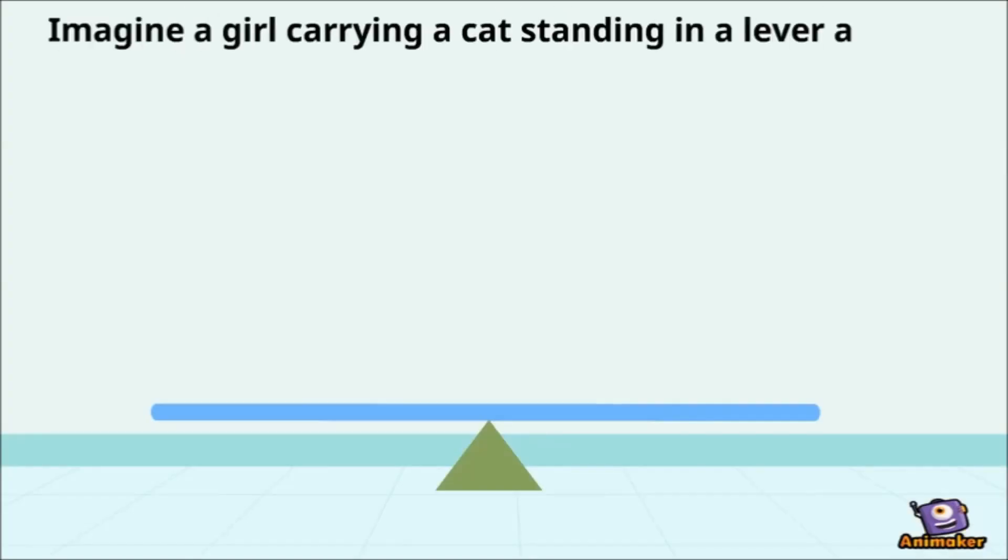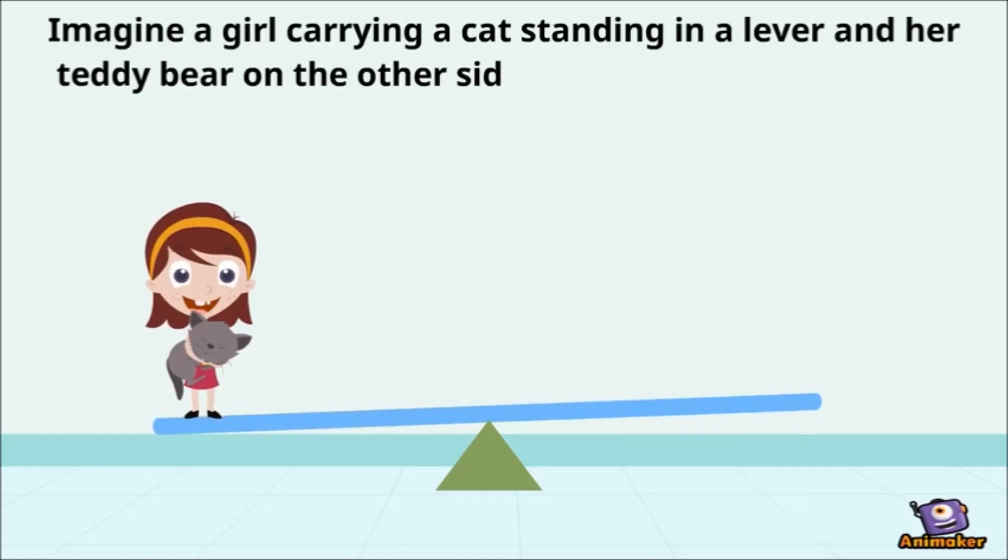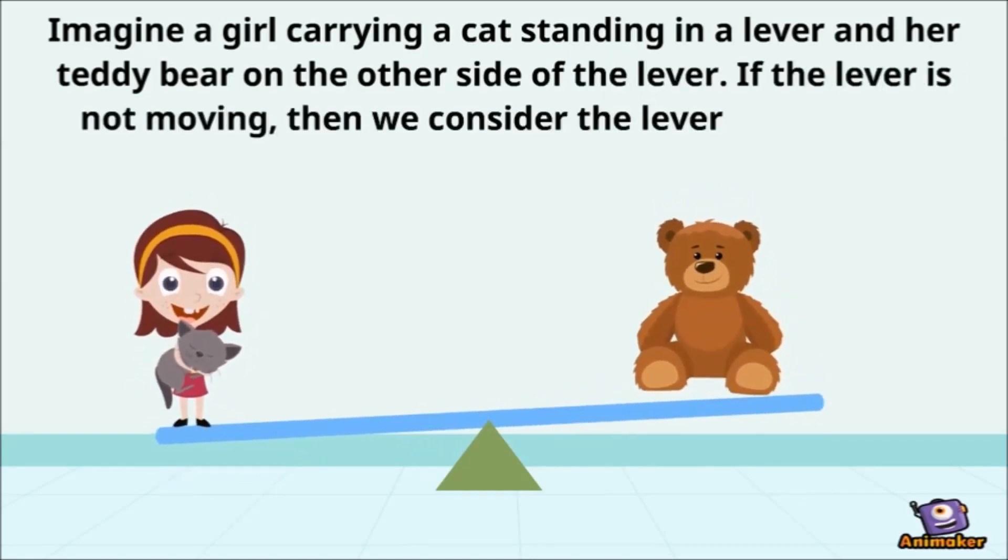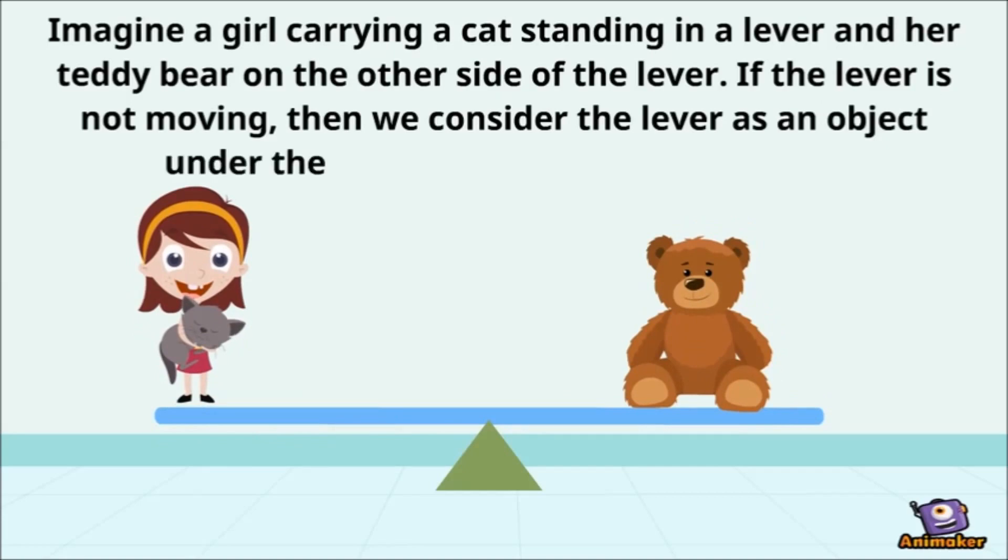Imagine a girl carrying a cat standing in a lever and her teddy bear on the other side of the lever. If the lever is not moving, then we consider the lever as an object under the state of rotational equilibrium.